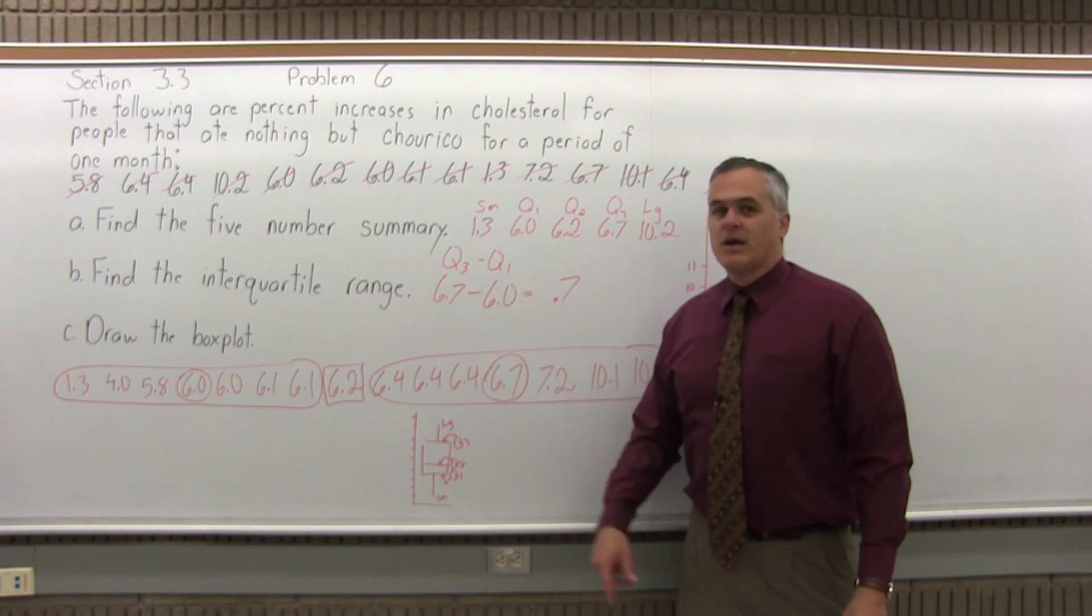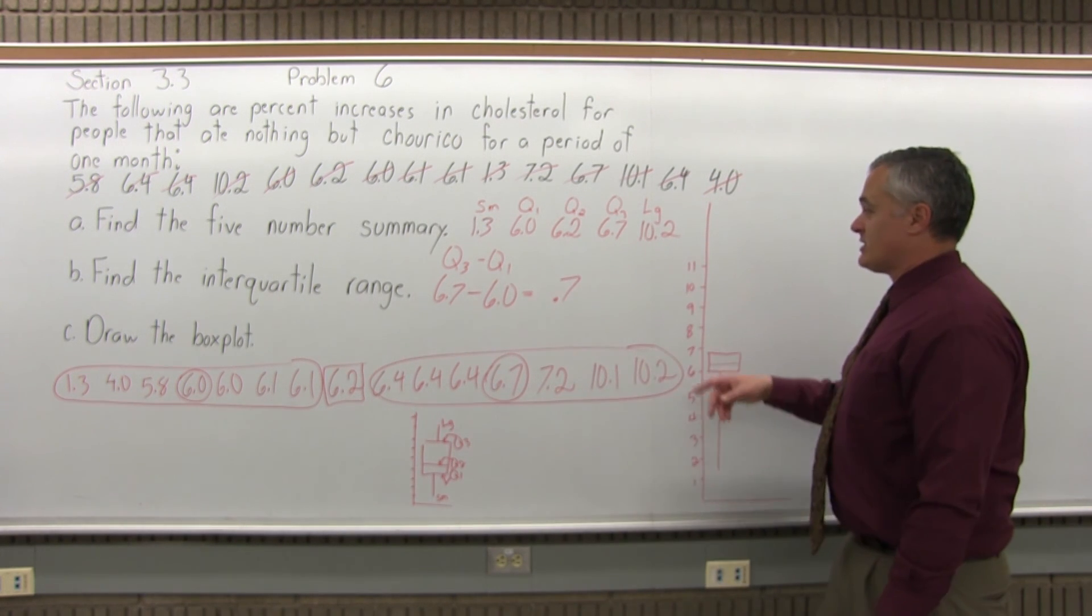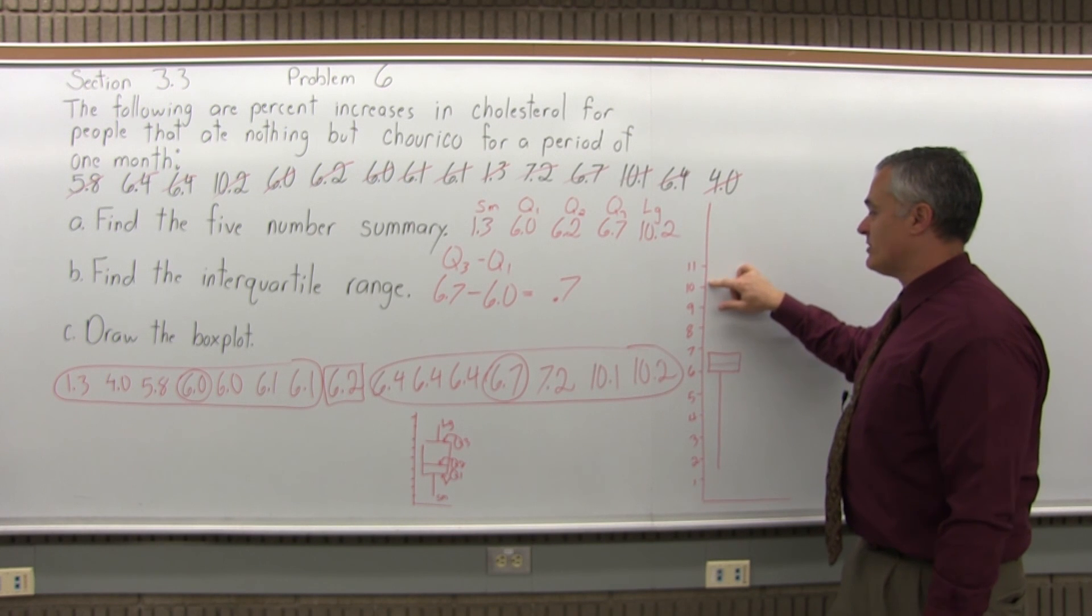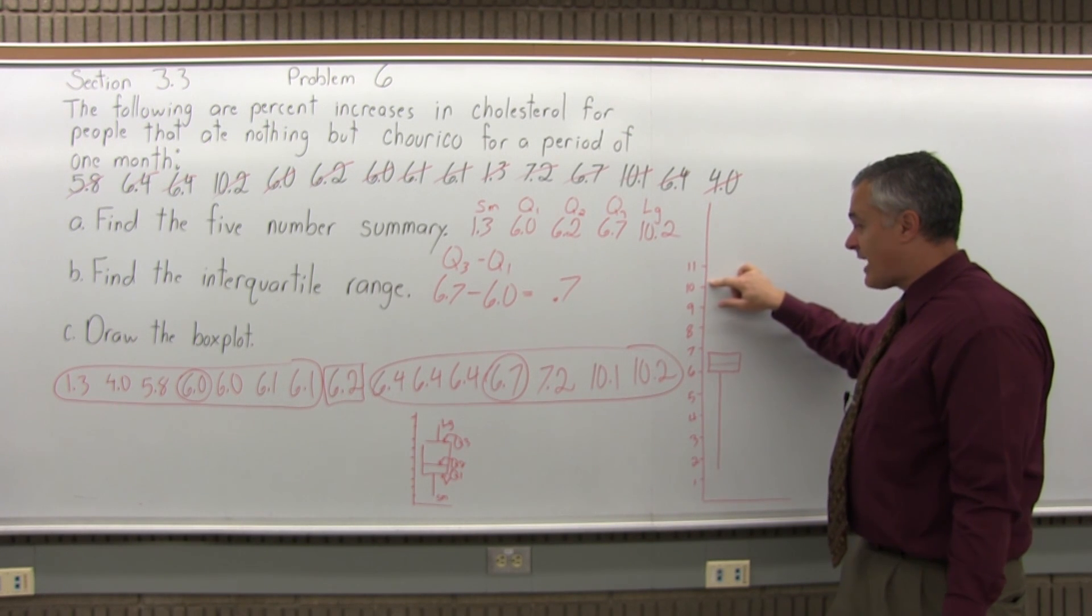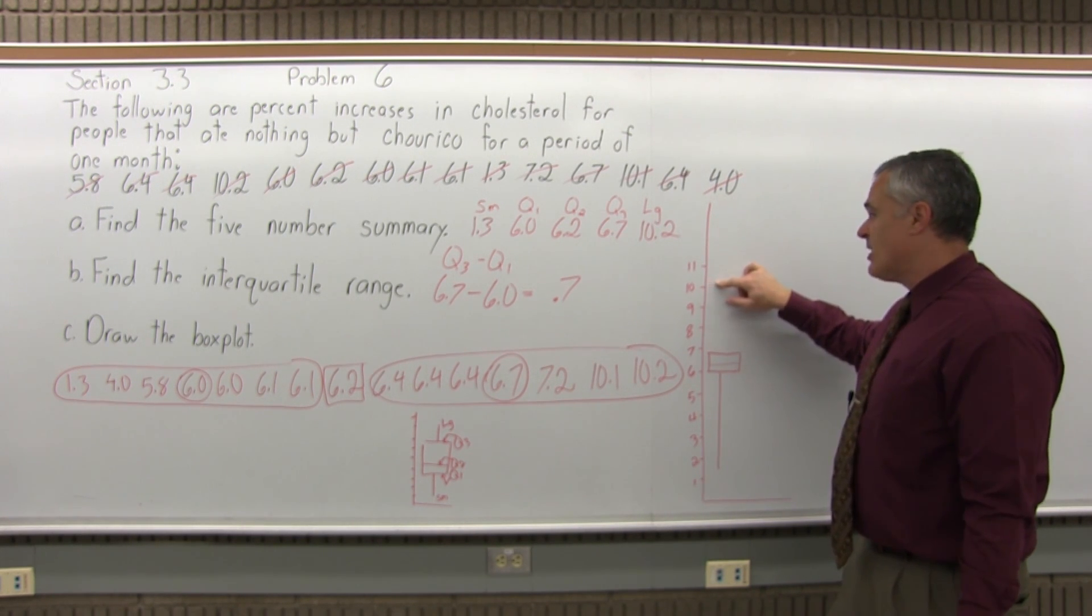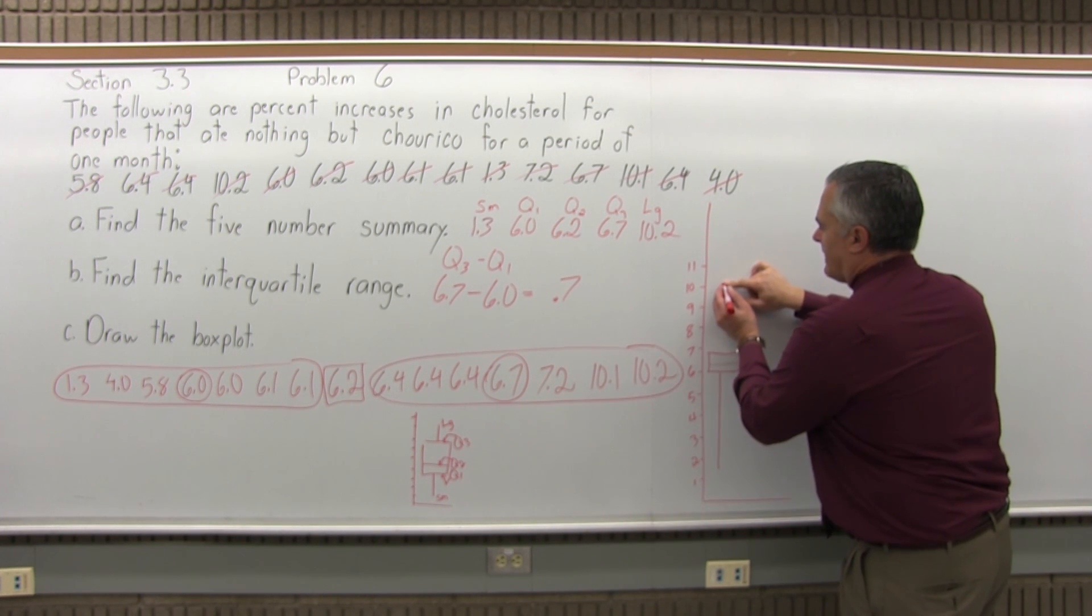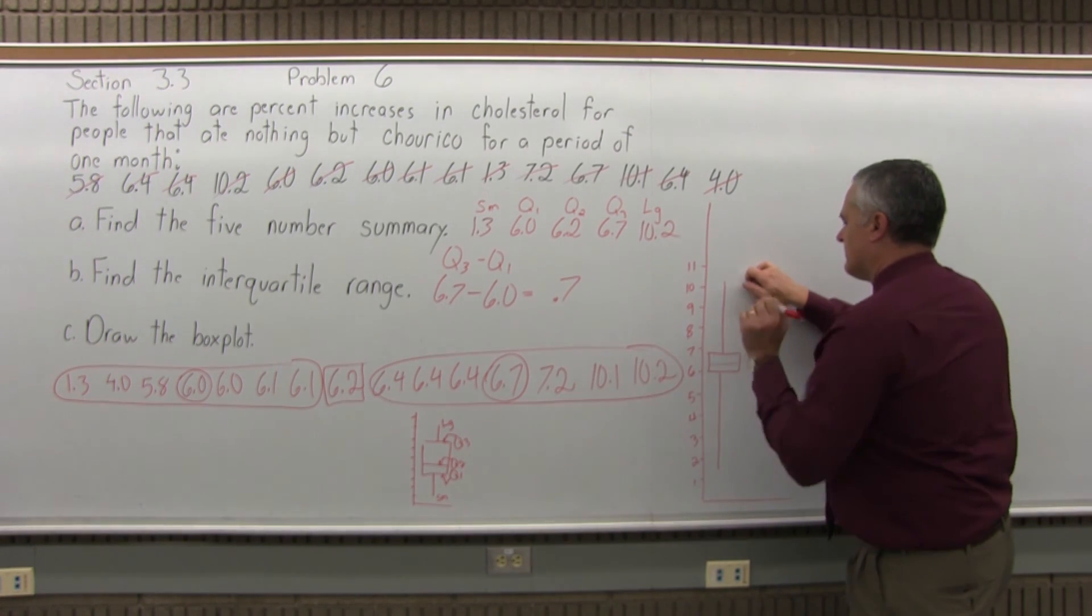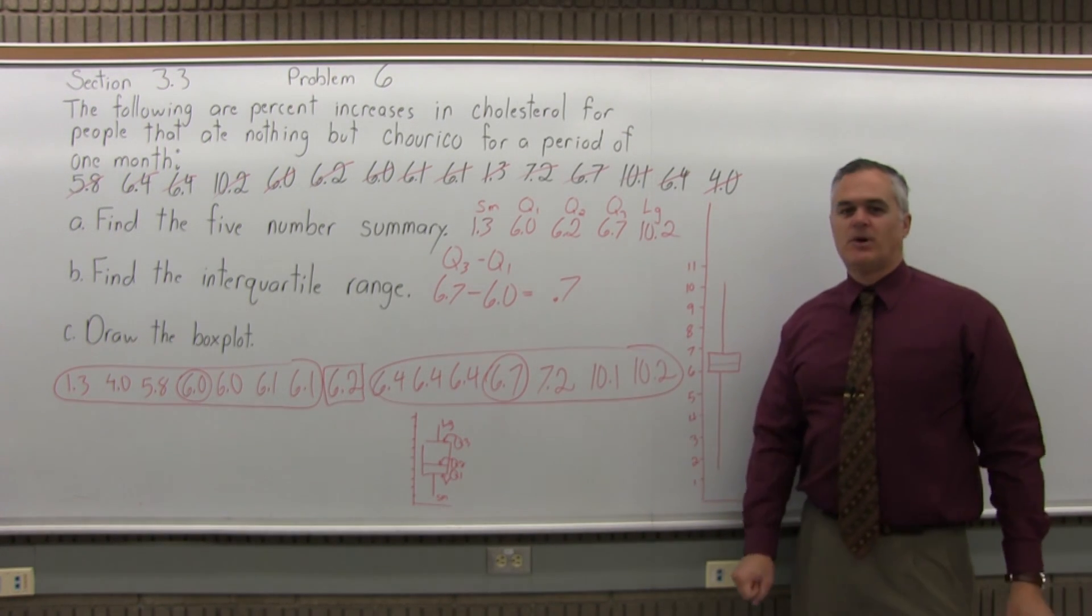And then you have a line coming out of the top of the box that goes to your largest data value, which is 10.2. Again, my number scale doesn't have a 10.2, but 10 and one quarter, 10.25, would be a quarter of the way up. So almost at that 10 and one quarter height, you have a line that comes out of the top of the box, and that's the box plot.